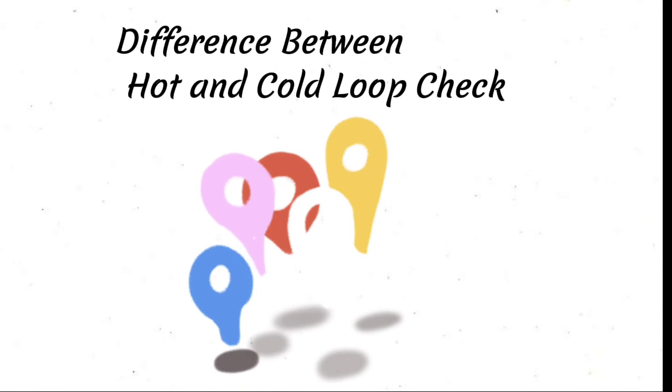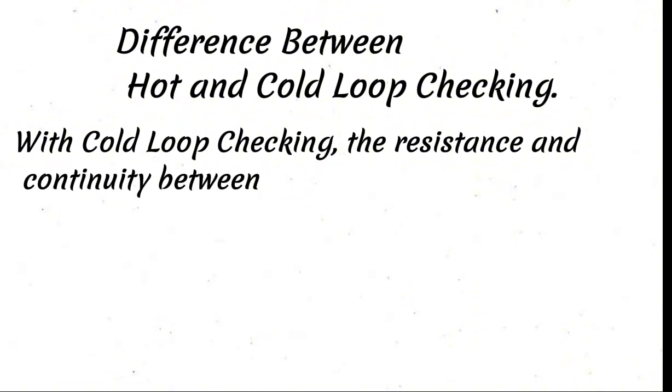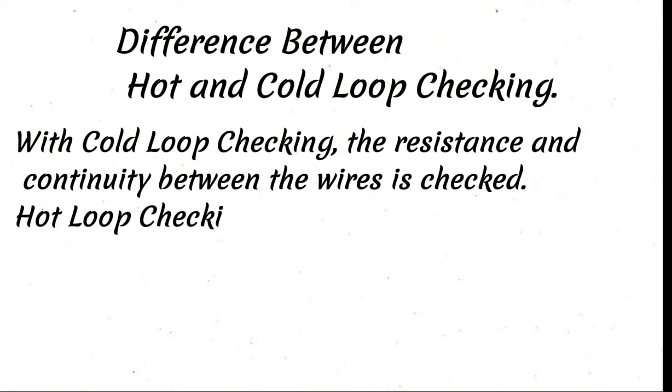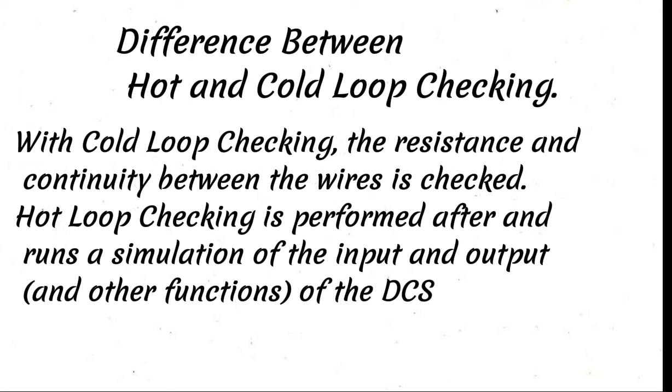Difference between hot and cold loop checking. With cold loop checking, the resistance and continuity between the wires is checked. Hot loop checking is performed after and runs a simulation of the input and output and other functions of the DCS or PLC controller.